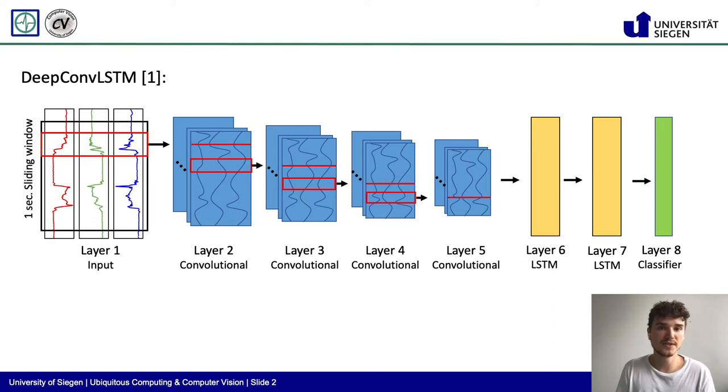In our work, we have visited the popular DeepConvLSTM architecture by Adonius and Roggen. To this date, the architecture is a state-of-the-art method for applying deep learning on human activity recognition.